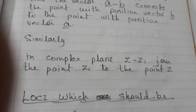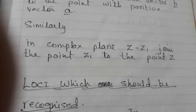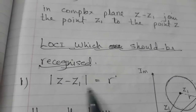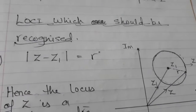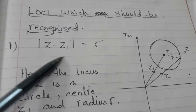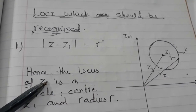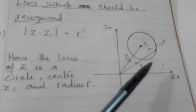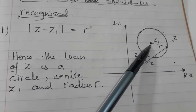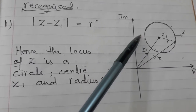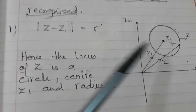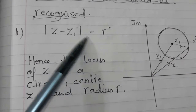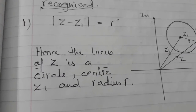So let's start and see which loci we must know. Basically there are three types. The first case is |Z minus Z1| equals R. This means you will have a locus of Z which has a center Z1 and radius R. Looking at the diagram, this is your center, the radius is R, and this circle is basically your locus Z. So when you see a locus in this form, immediately you will recognize it will be a circle with center Z1 and radius R.